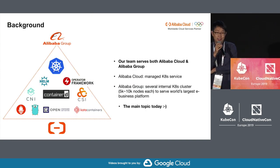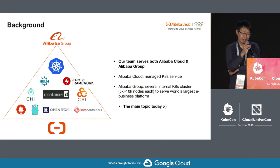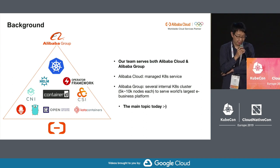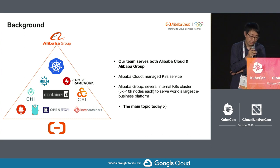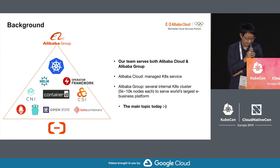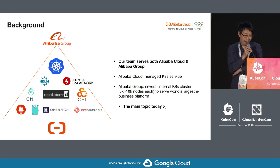Our team in Alibaba serves both Alibaba Cloud and Alibaba Group. Alibaba Group is the e-commerce system in China, one of the largest e-commerce platforms in the world. Alibaba Cloud is the biggest cloud provider in Asia, and we also provide managed Kubernetes services like AWS or Microsoft. In Alibaba Group, we maintain several internal Kubernetes clusters, each with more than 5,000 nodes, and the largest has at least 10,000 nodes. The whole technology stack is based on open-source technologies including Kubernetes, Operator, ContainerD, RunC, and CutContainers.